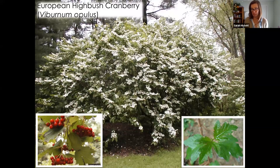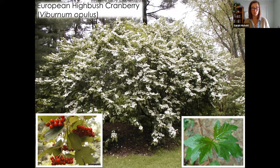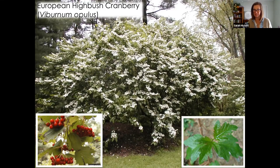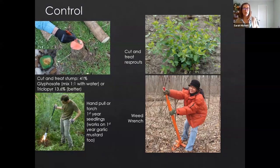European highbush cranberry is another commonly planted invasive viburnum. It has opposite branching, beautiful white panicle flowers in summer, clusters of red berries, and maple-looking leaves. This is one to consider replacing in your landscaping.